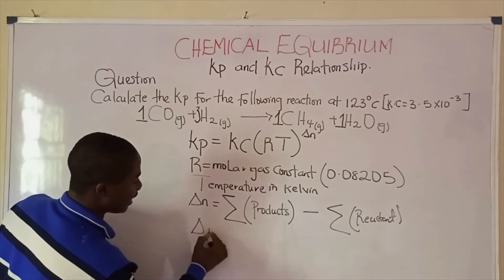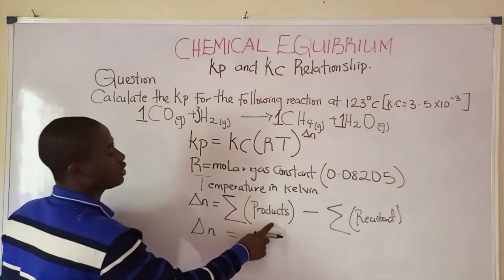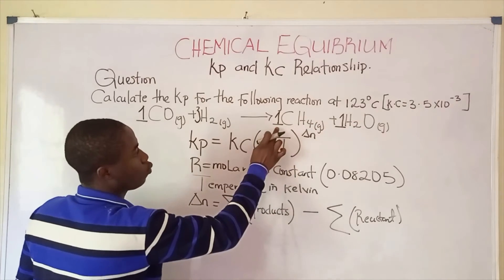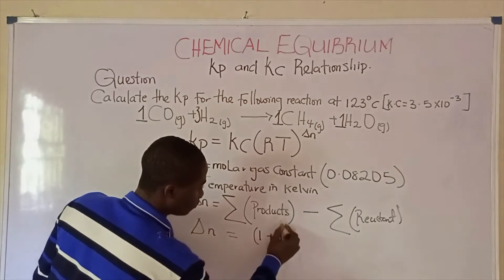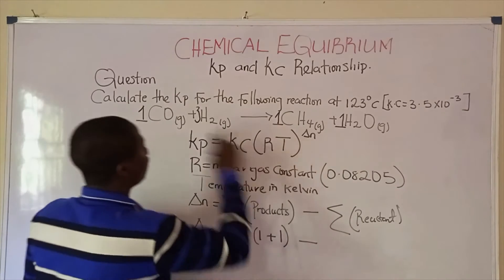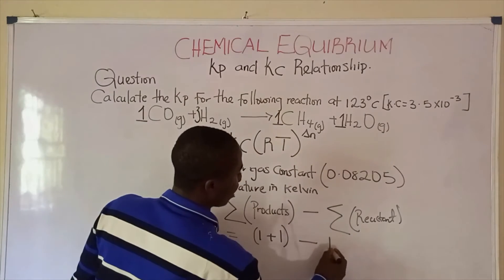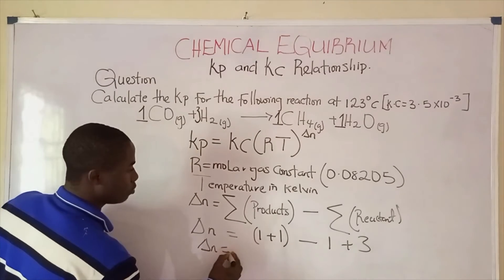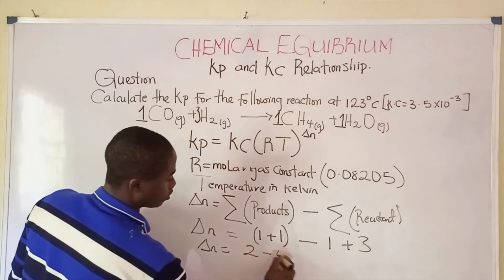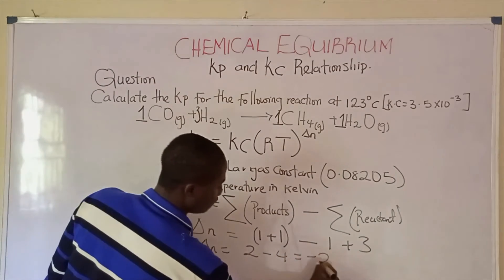Change in N becomes, what is the sum of the number of moles of the product? 1, 1. So it's simply 1 plus 1 minus, for the reactant it's simply 1 plus 3. So delta N becomes 2 minus 4, which gives us negative 2.